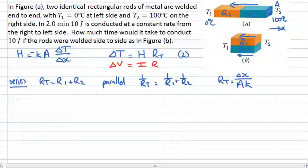Let's have a look at equation 2 for the situation when we're in series. The temperature difference is 100 degrees Celsius. The heat flow is 10 joules in 2 minutes, so 10 joules in 120 seconds or 1 twelfth of a joule per second. That is my heat flow.